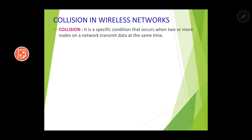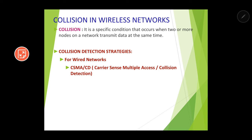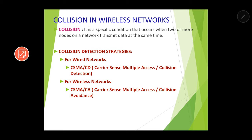For detection of collision, there are certain strategies, and this strategy varies in wired networks and in wireless networks. As per the CBSE syllabus, we need to study only collision in wireless networks. For wired networks, the collision detection strategy is known as CSMA/CD — carrier sense multiple access with collision detection. But for wireless networks, the strategy is CSMA/CA — carrier sense multiple access with collision avoidance.